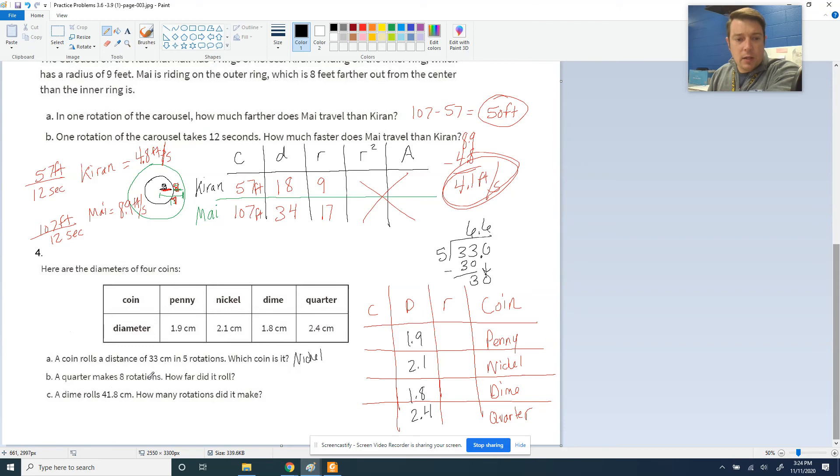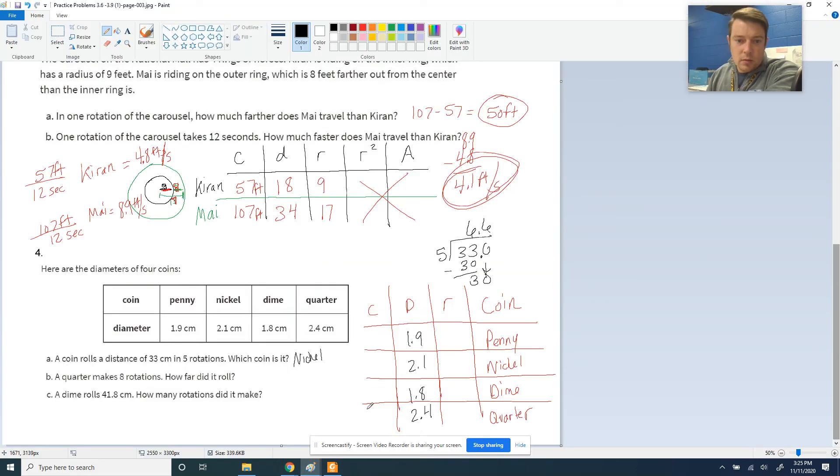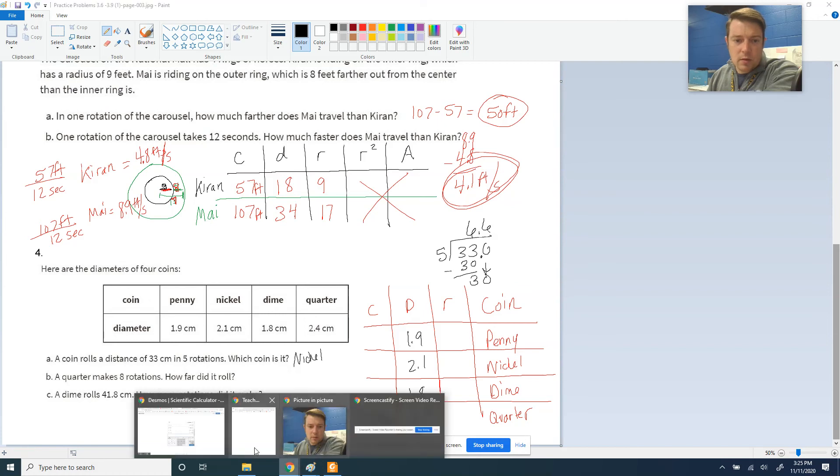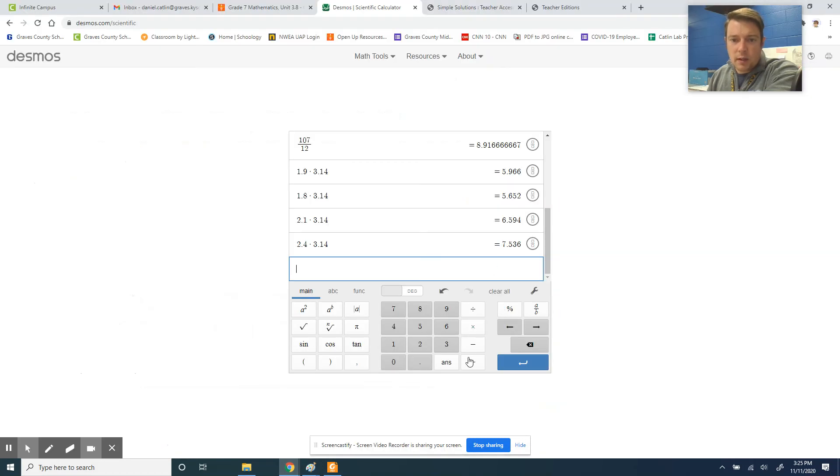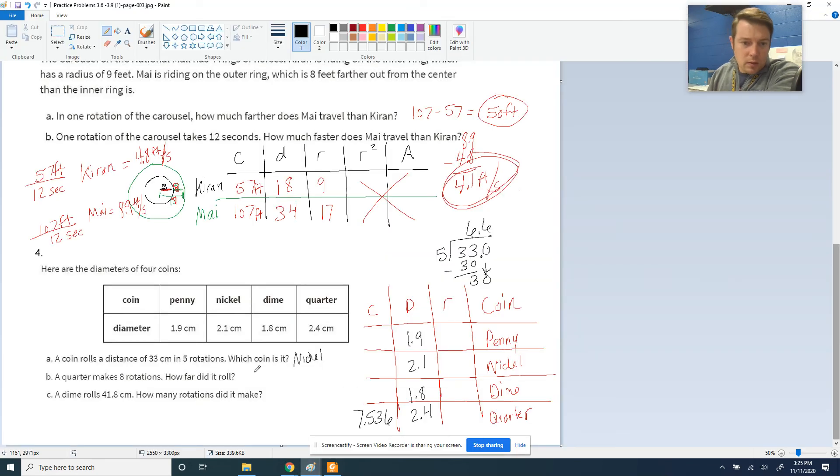A quarter makes 8 rotations. How far did it roll? Well, the quarter was the 2.4, so let's find out what its circumference was. 2.4 had a circumference of 7.536. And 8 rotations, we need to multiply that by 8. 7.536 times 8 equals 60.3. So we'll go with 60.3 centimeters.